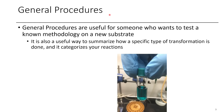If you have a general procedure, it's useful to list that for a given transformation. For example, if you made an amide out of several carboxylic acids, those can all be grouped into one general procedure. If you can classify things, that makes it easier for a reader to follow. It's also useful if you want to adapt a methodology to a new substrate, whereas your specific case-by-case substrates might have slight variances from the general procedure.